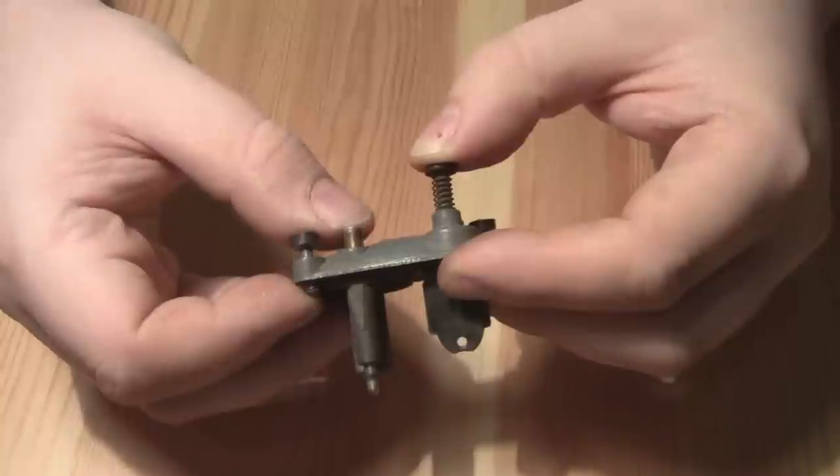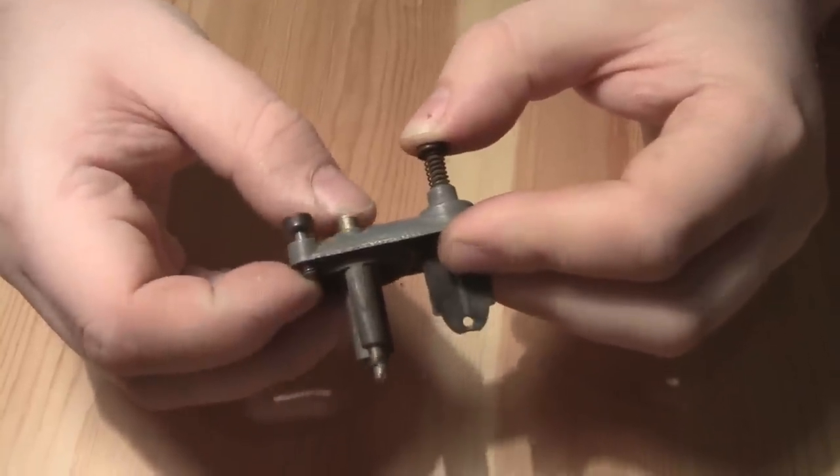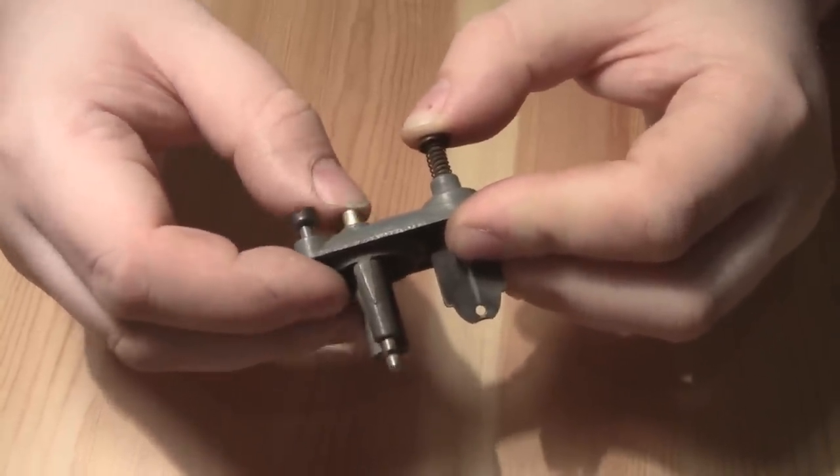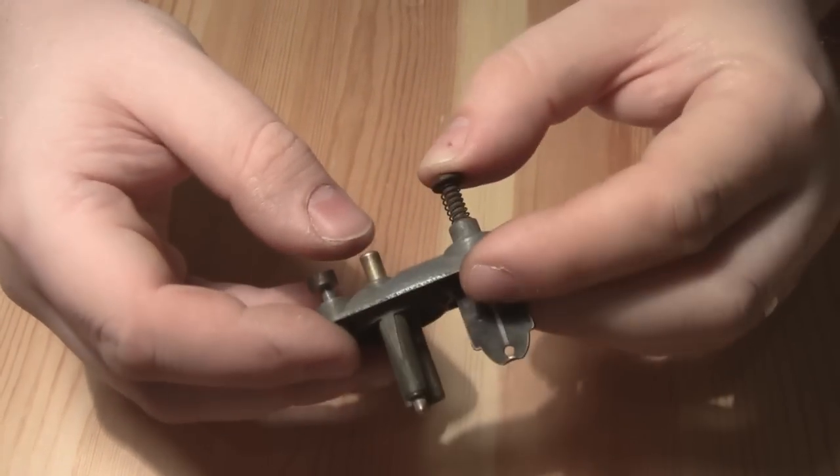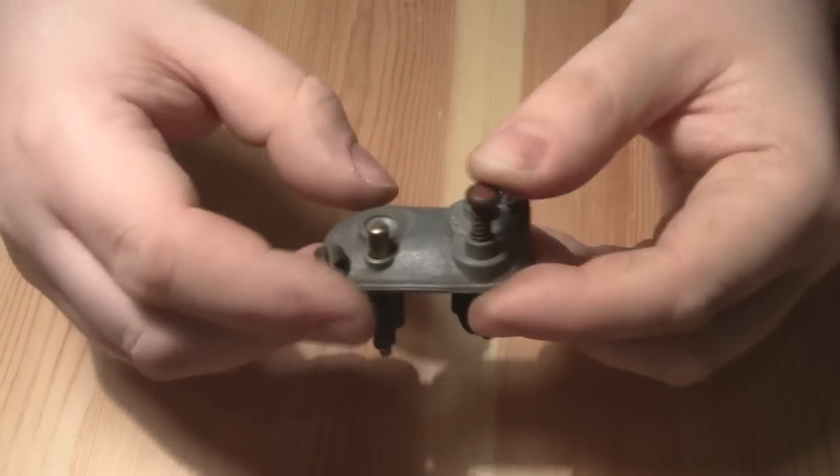This plunger here, I'm not entirely sure what that does. I think it just allows air into the float chamber so it doesn't get a vacuum, but I just gave that brass bit a polish.